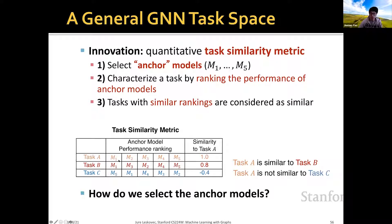The second step is to characterize a task by ranking the performance of anchor models. For example, task A has the ranking 1, 2, 3, 4, 5; task B has a different ranking of 1, 3, 2, 4, 5; and task C has yet another ranking among the anchor models. The key insight is that tasks with similar rankings are considered similar. The similarity between task A and task B is high, while the similarity between task A and task C is low — giving us a quantitative measure between different GNN tasks.